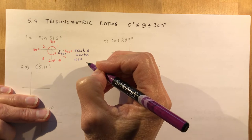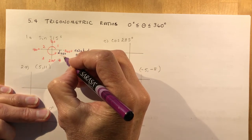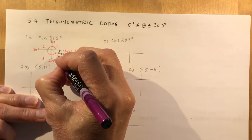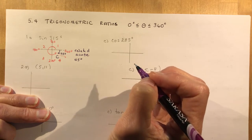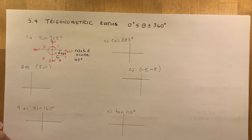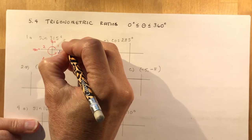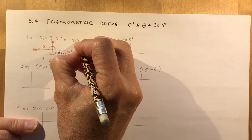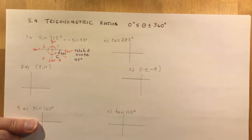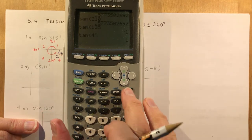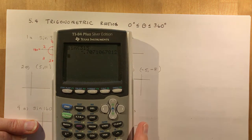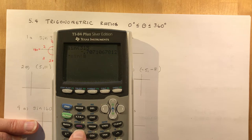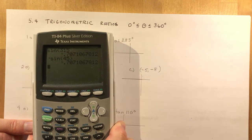Remember: every angle outside of the first quadrant has a related acute angle. If this is 315 degrees, that means I'm 45 degrees back to the x-axis, so the related acute angle is 45 degrees. They also want the sign of the ratio. Remembering your CAST rule, only cosine is positive in quadrant four, so sine would be negative. The sine of 315° equals the negative sine of 45°. You can verify this on your calculator — both give negative 0.707. That's math magic!